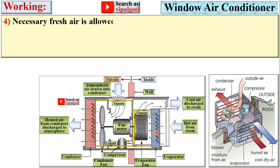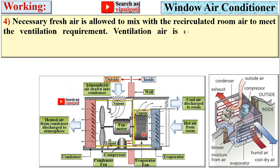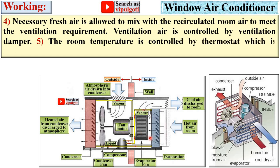Next, necessary fresh air is allowed to mix with the recirculated air to meet the ventilation requirement. And ventilation air is controlled by ventilation damper. The room temperature is controlled by thermostat which is required to turn on and off power supply to the compressor motor.